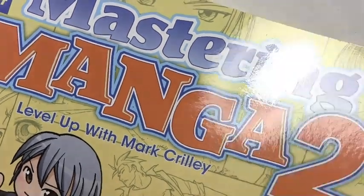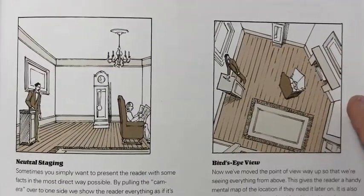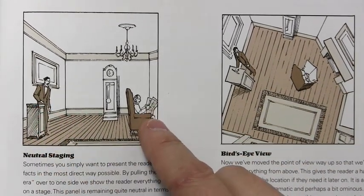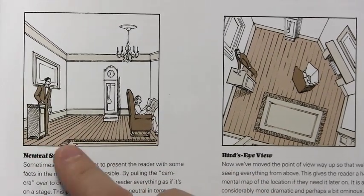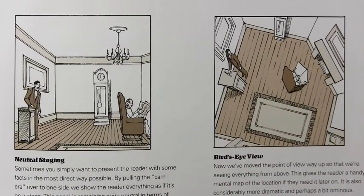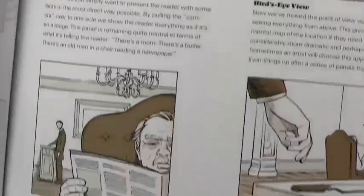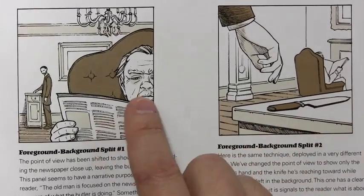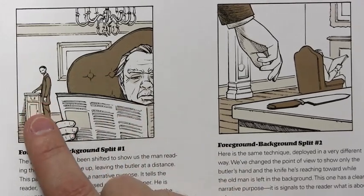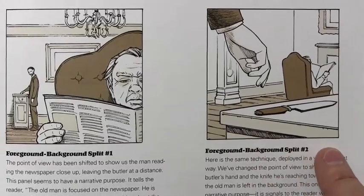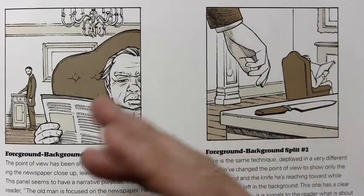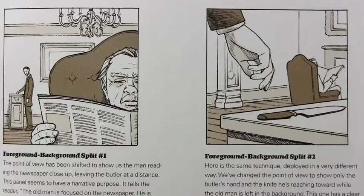In my book Mastering Manga 2, there's quite a long section about comic book creation, and one of the pages is on this topic of camera angles. Here you see a scene where there's a butler and an old man reading a paper, presented like a stage play from left to right. Here's the exact same scene from an aerial point of view. And down here we have more dramatic ways — we've pulled the camera around to show the old man's face, revealing he's not really paying attention to the butler. Something menacing is going on, and here may be the most menacing way of presenting it, with a knife in the foreground. This shows that any given scene can be presented in literally hundreds of different ways.